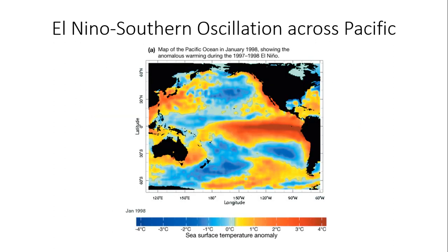El Niño Southern Oscillation — looking at what El Niño looks like. If you look at the maroon shading just off the coast of South America in the Eastern Pacific, notice the orange and maroon shading indicating well above normal sea surface temperatures — sometimes in excess of four degrees Celsius above normal. This whole change in the dynamics of the Pacific Ocean plays a significant role in the weather of the United States.